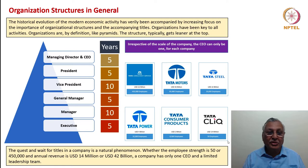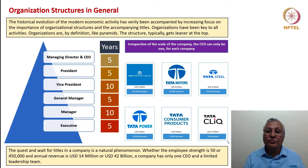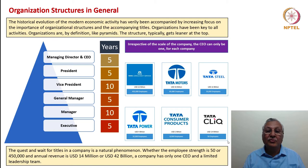Another important thing to note is that irrespective of the scale of the company, the role of the CEO tends to be only one. I have presented here six companies from the Tata Group with employee strength ranging from 50 to 450,000 and turnover ranging from 40 million dollars to 42 billion dollars — all of these companies have only one Chief Executive Officer. This underlines the challenge and the probably unnecessary requirement of trying to seek only the CEO role as the goal post for career development or for one's leadership journey.